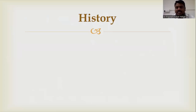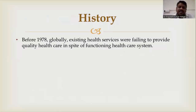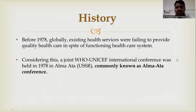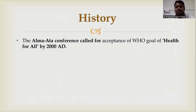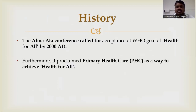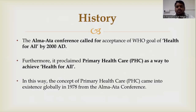How did primary healthcare start in India? Before 1978, health systems existed in India but failed to provide quality healthcare. WHO and UNICEF called all member nations to a conference at Alma-Ata in 1978, commonly known as the Alma-Ata Conference, attended by 134 countries and other agencies. They concluded that Health for All by 2000 AD should be achieved, and primary healthcare was identified as the only way to achieve that goal. Thus the concept of primary healthcare came into existence globally in 1978.